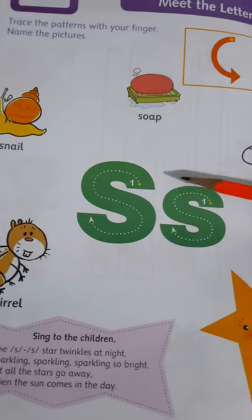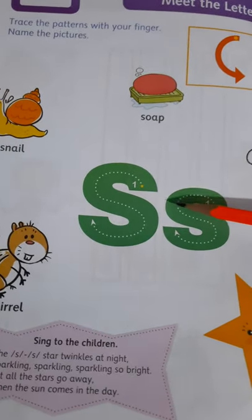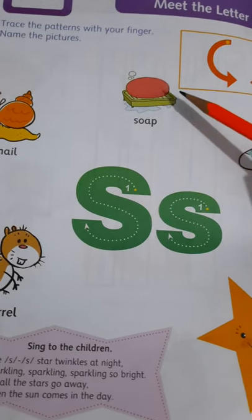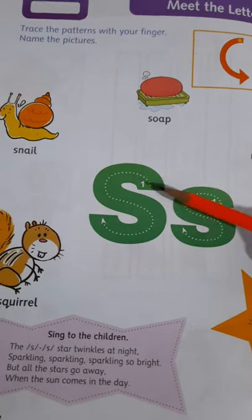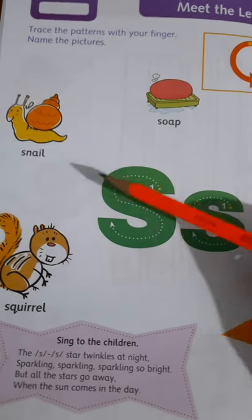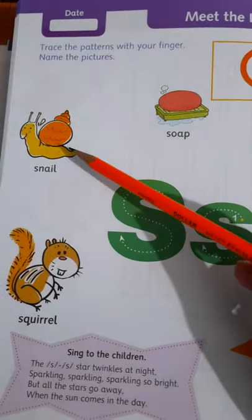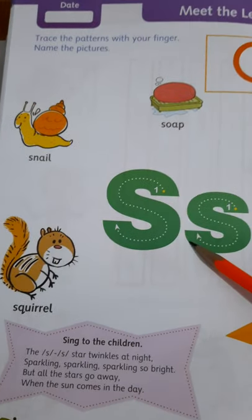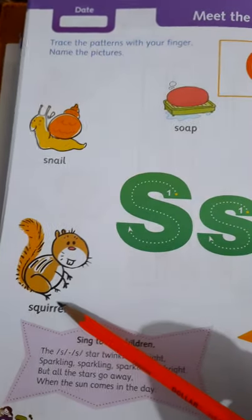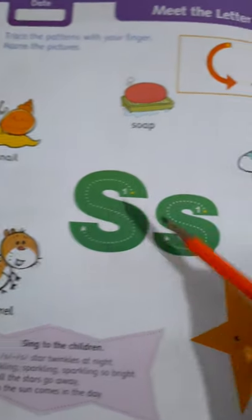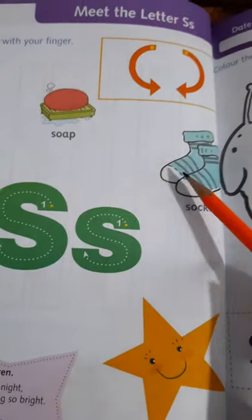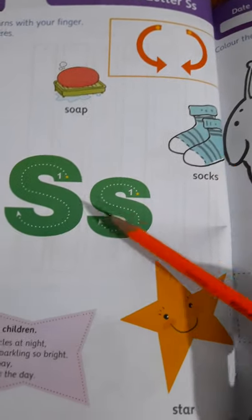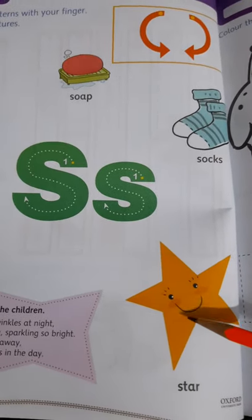Now read these vocabulary words. S — Soap. S — Snail. S — Squirrel. S — Socks. S — Star.